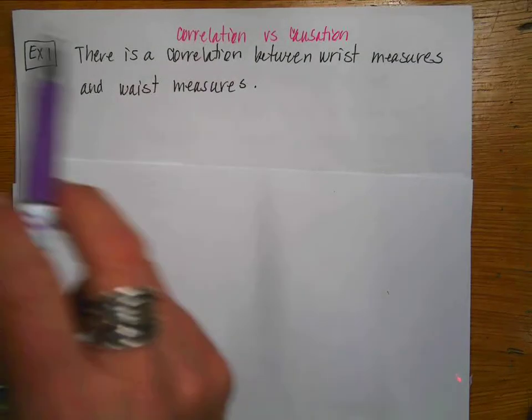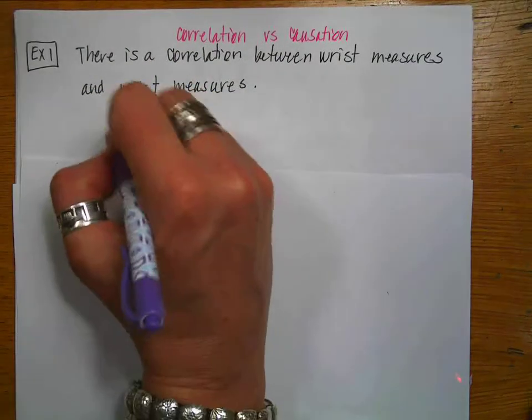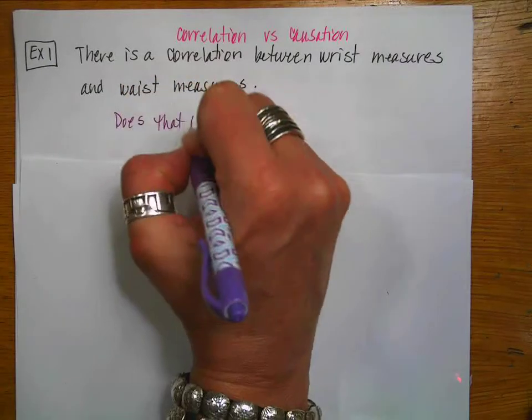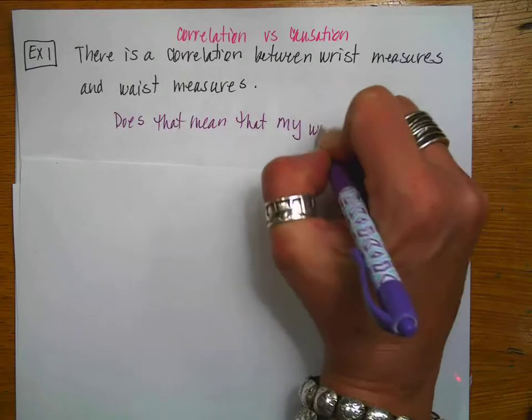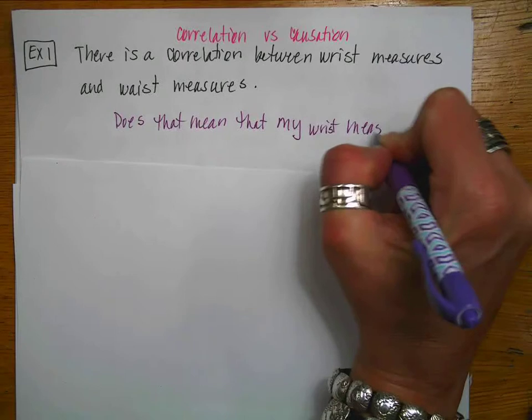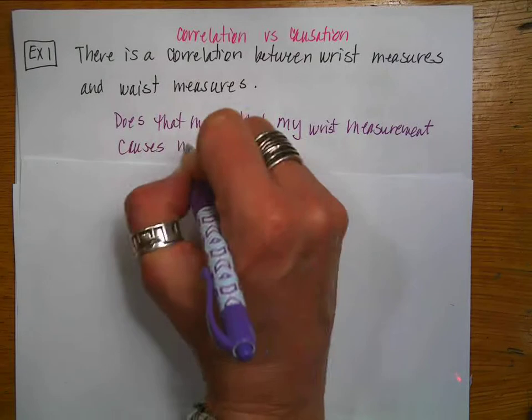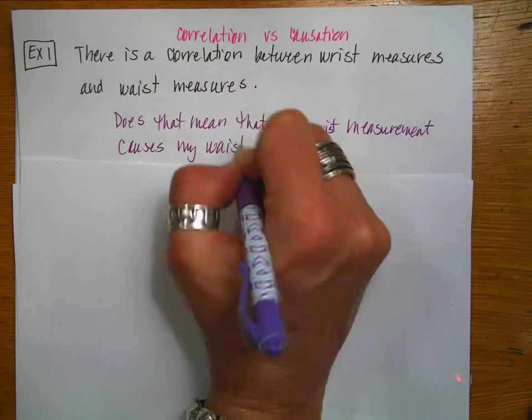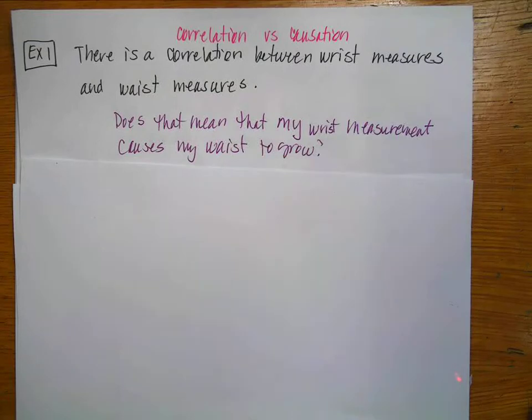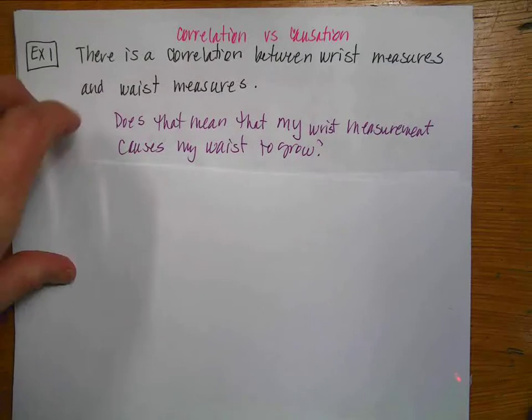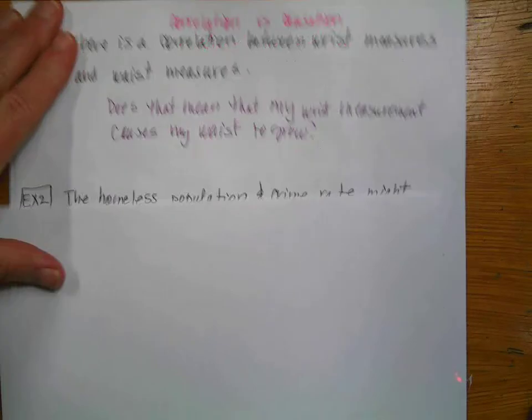The first one says there's a correlation between the measure of your wrist and the measure of your waist. So then a question that I would ask is, does that mean that my wrist measurement causes my waist to grow? Which is entertaining because it's hard to make the size of your wrist change, but it's harder to make that happen than it is to make the size of your waist grow.